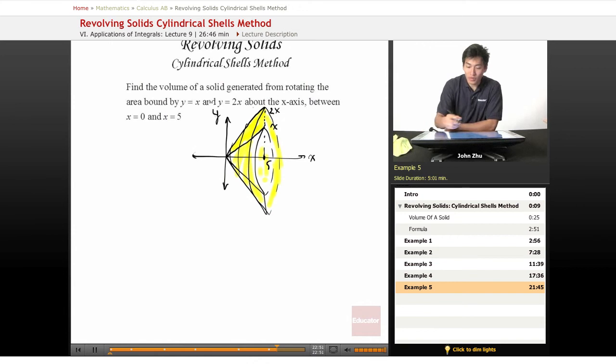So now let's draw our cylinder and let's draw it right here in the middle so it's nice and clear to see that this cylinder has an infinitesimally small shell thickness.